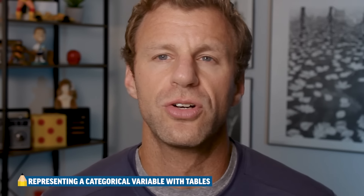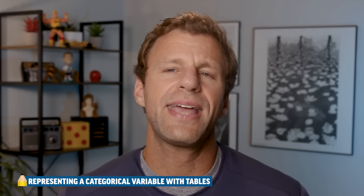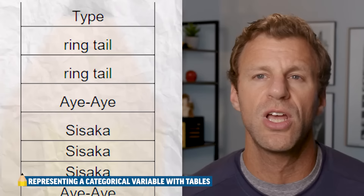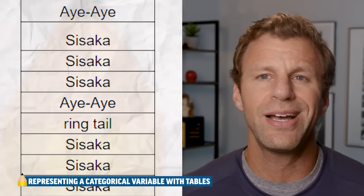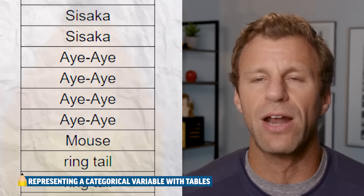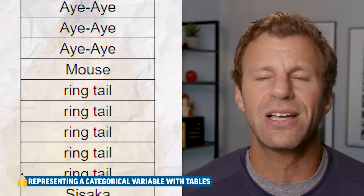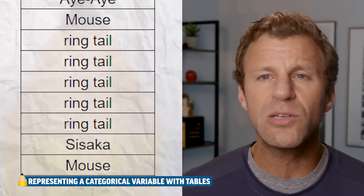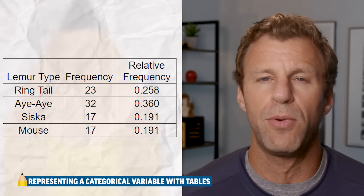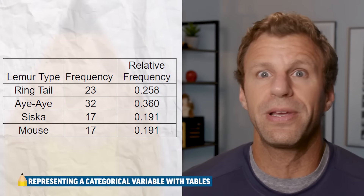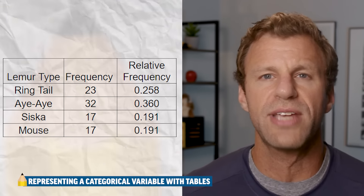Let's start off with categorical data, because it really is shorter and much faster to talk about. Let's say that we take a sample of 89 lemurs, and one of the variables we want to analyze is the type of lemur — whether it's a sifaka, an aye-aye, a ringtail, or a mouse lemur. Those are all words, which makes this a categorical variable. If we just have all that data collected, it's probably going to be a really long boring list, so the first thing we do is organize it into a frequency table — frequency is just a fancy word for counts. We list each of the categories and count how many lemurs fit into each.